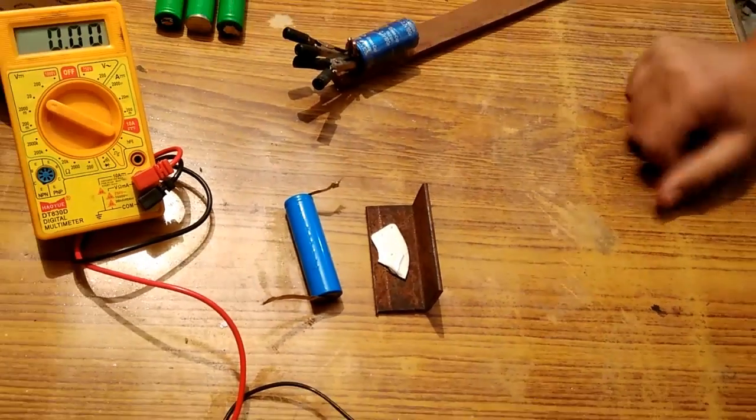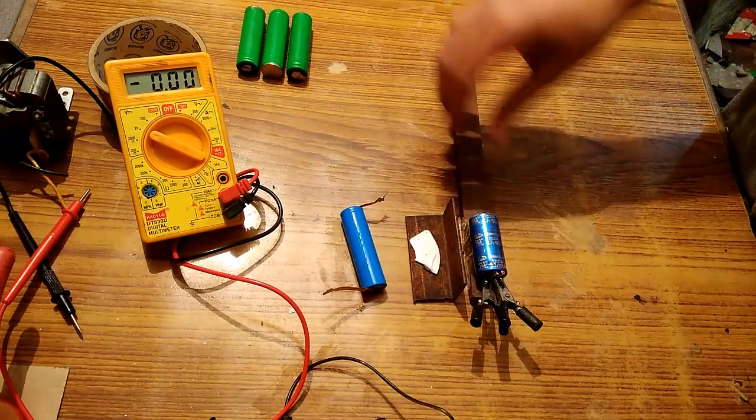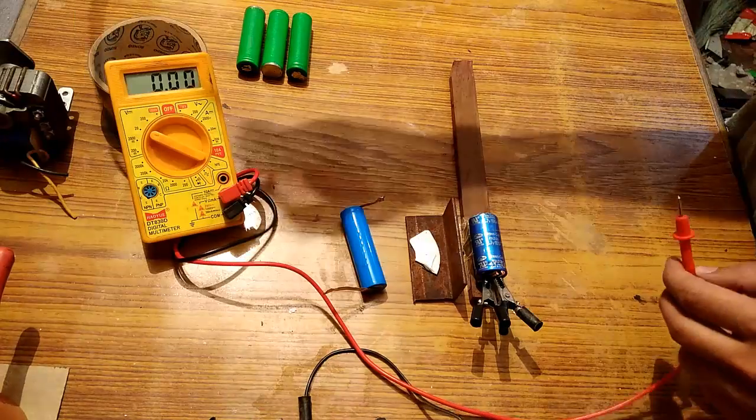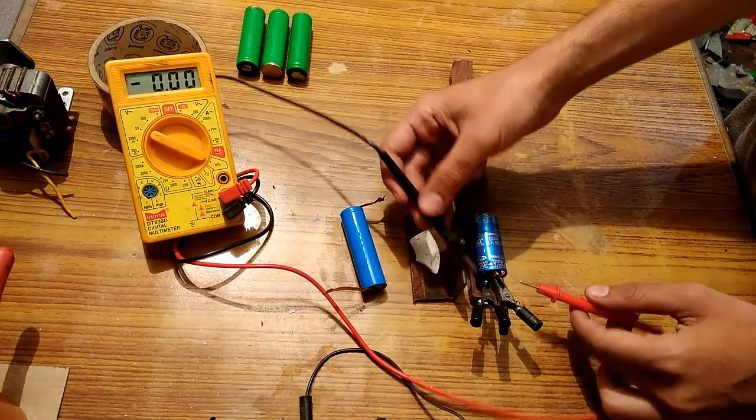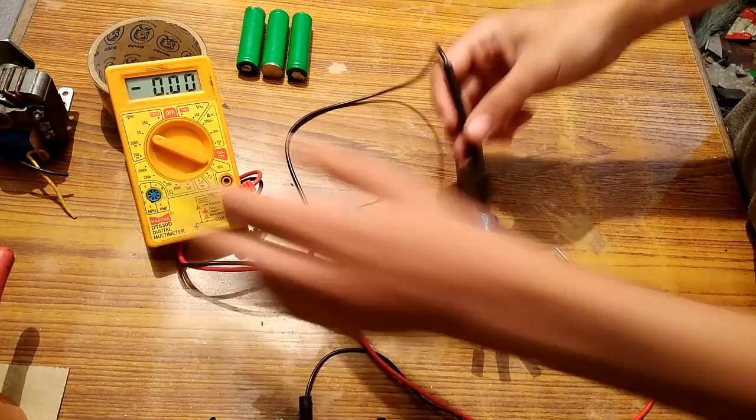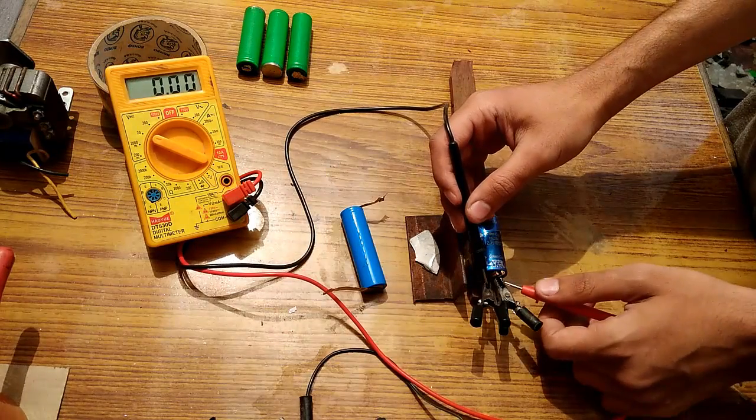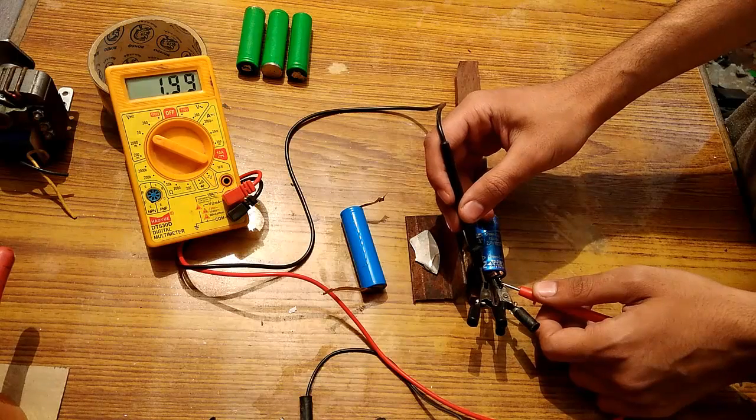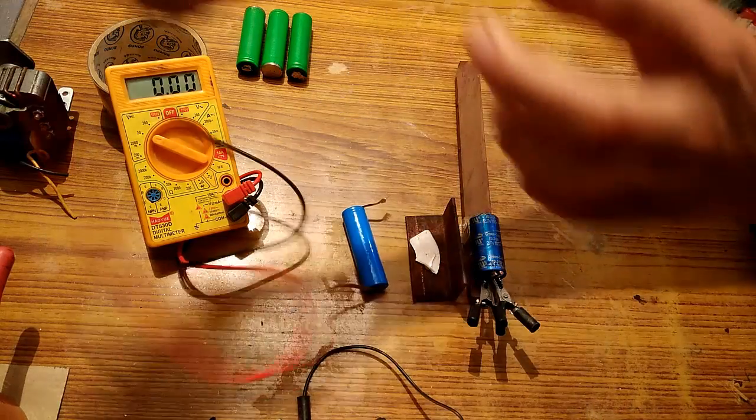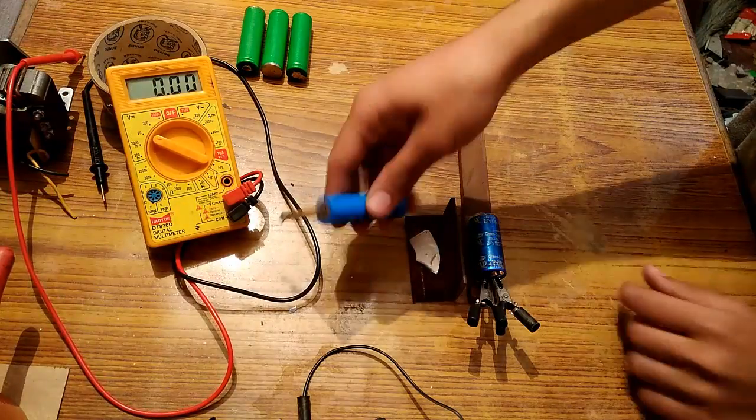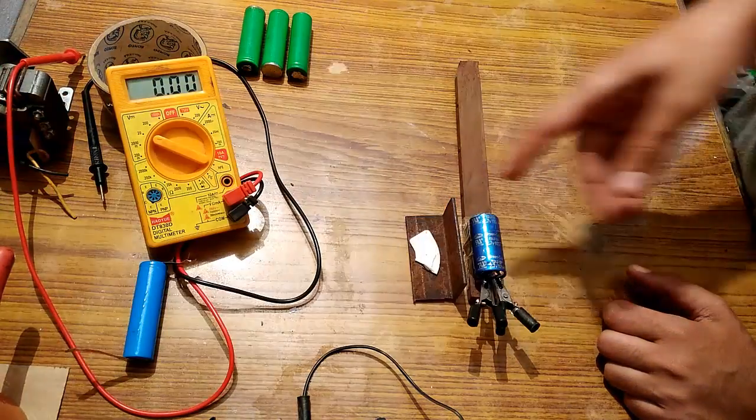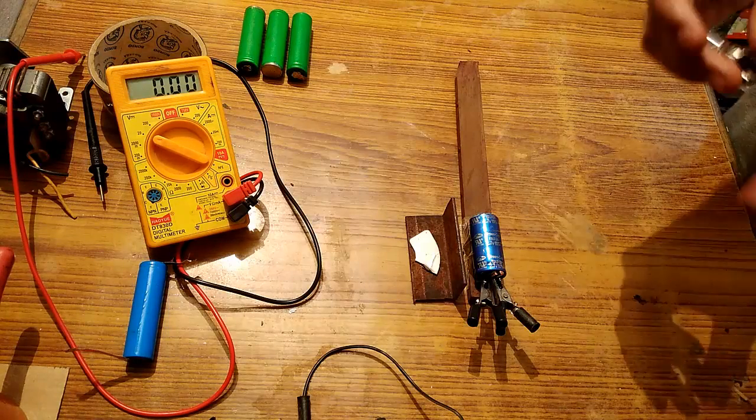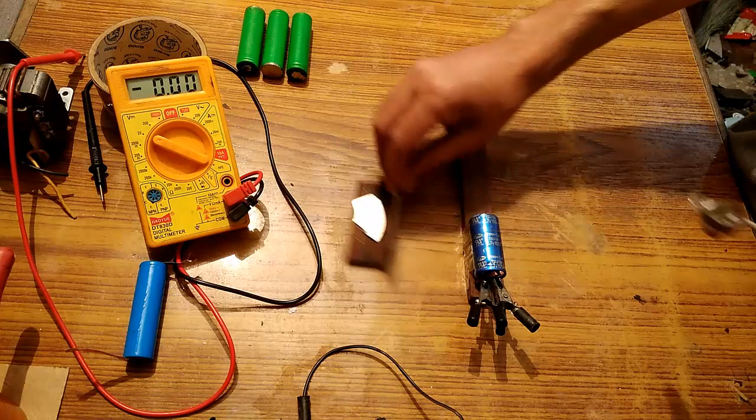Let's see the voltage that is still left in the capacitor after the short circuiting. It is still 1.98 volts, around 2 volts. If you want, you can still do more weldings.